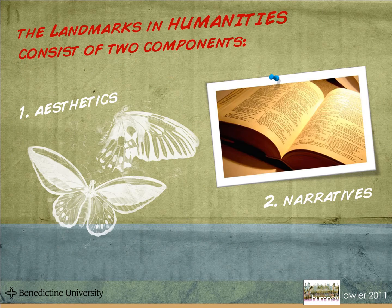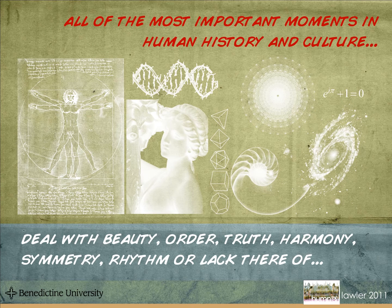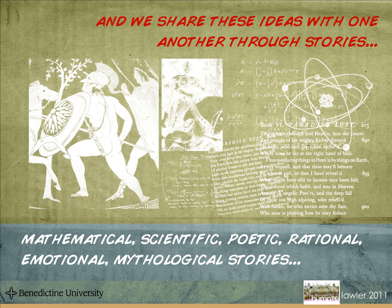The landmarks in humanities consist of two components: aesthetics and narratives. All of the most important moments in human history and culture deal with beauty, order, truth, harmony, symmetry, rhythm, or lack thereof. And we share these ideas with one another through stories — mathematical, scientific, poetic, rational, emotional, mythological stories.